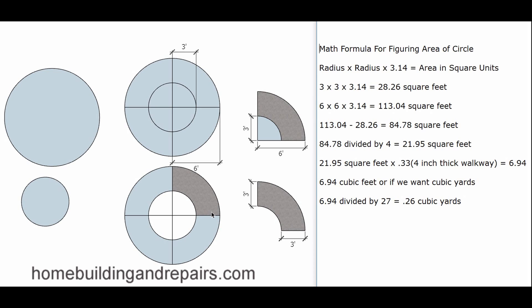If you were going to have a walkway shaped like half of the donut, you would simply divide this number by two. If you were going to have three-quarters of the shape, you can divide by four and then multiply by three, which would give you that area.